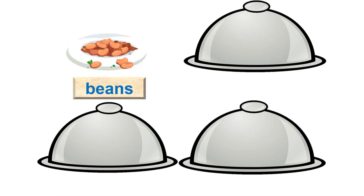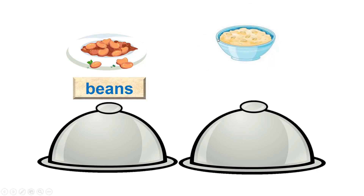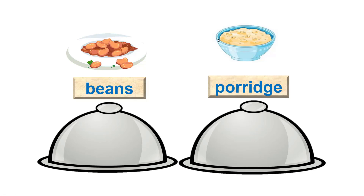Listen. Beans. Now repeat. Beans. Beans. Next one. Listen. Porridge. Now, repeat after me. Porridge. Porridge.